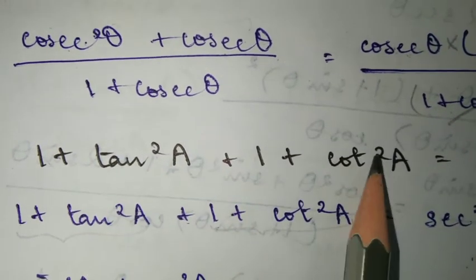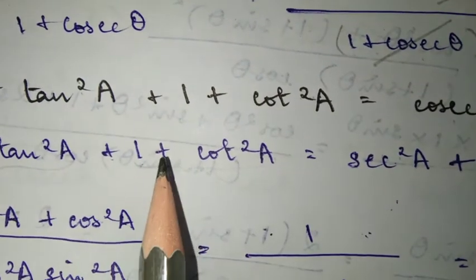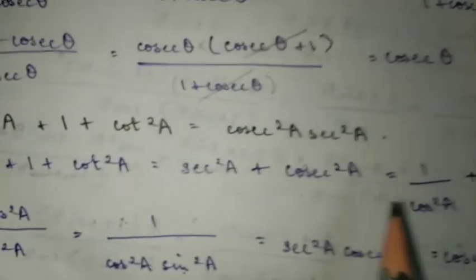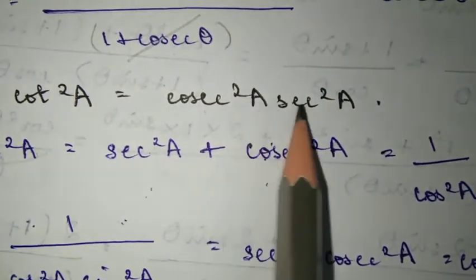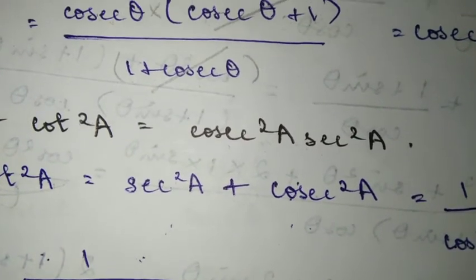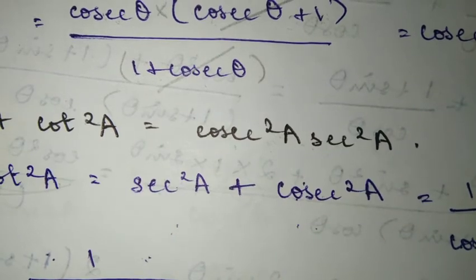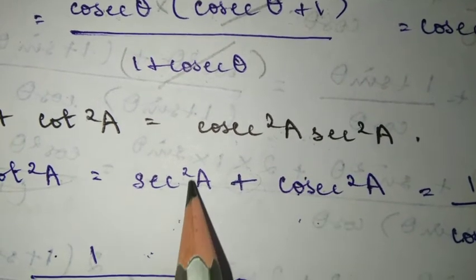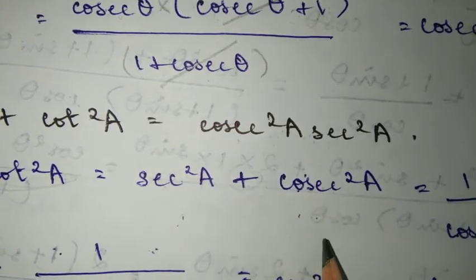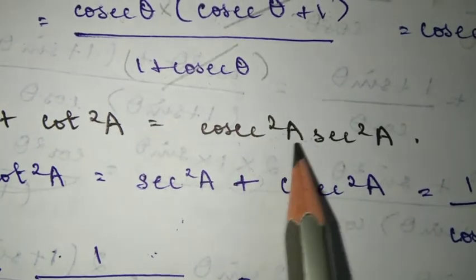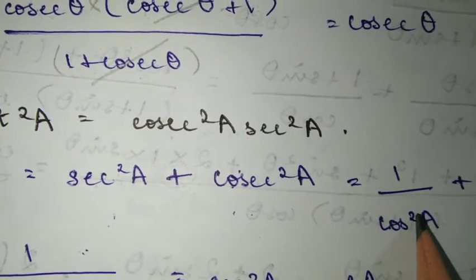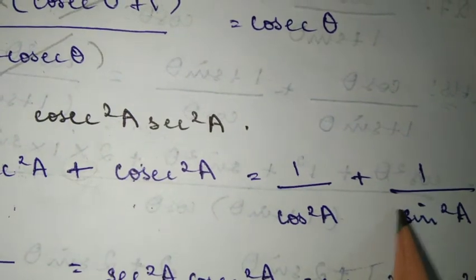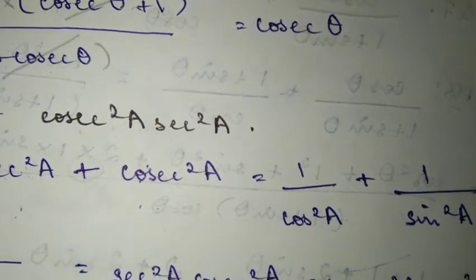LHS: we have 1 plus tan²A into sec²A, plus 1 plus cot²A into cosec²A. So we have sec²A plus cosec²A. Now, we multiply these terms. sec² is 1 over cos²A, and cosec² is 1 over sin²A. So the reciprocals: sec²A is 1 by cos²A, cosec²A is 1 by sin²A. Plus sign transforms to addition. So sec²A times 1 plus cos²A, plus cosec²A times 1 plus sin²A.